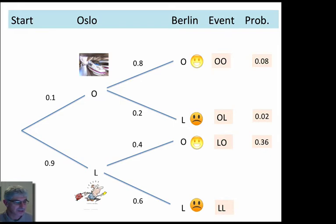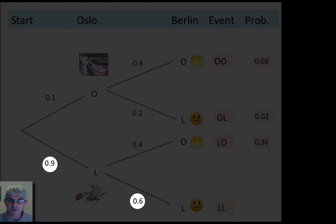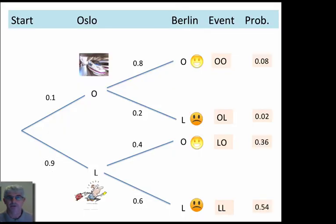And finally, late to both, just down the two bottom branches there, 0.9 times 0.6 gives 0.54.